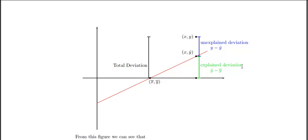There is total deviation, there is explained deviation, and there is unexplained deviation, or residual. The total deviation is the entire distance from the data point to the mean line on the y data set.